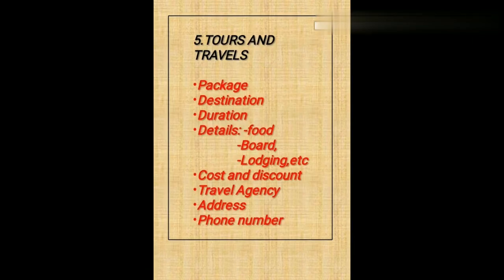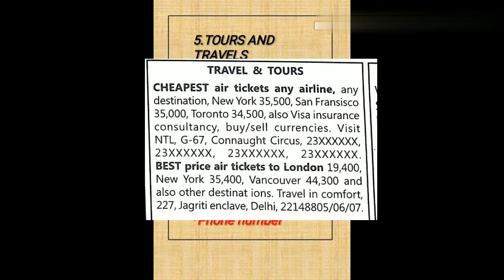Just like education, the fifth category — travel and tours — can also be written as a classified or commercial advertisement. If writing it in the classified section, mention the package, destination, duration, food, board, lodging, cost and discount, travel agency, address, and phone number.